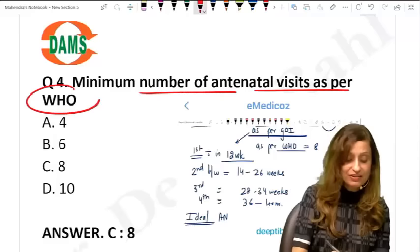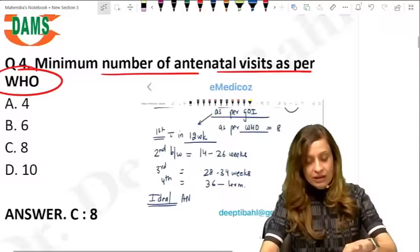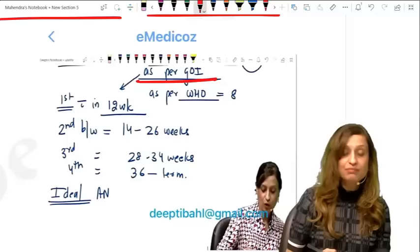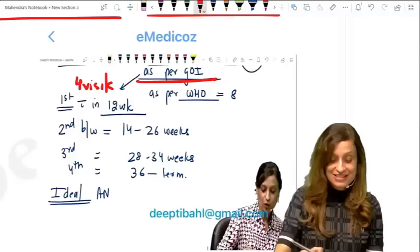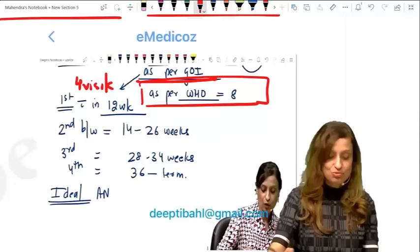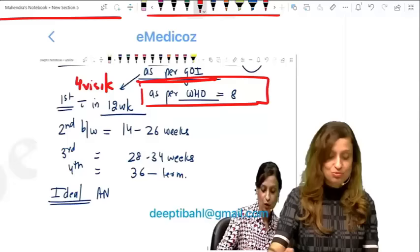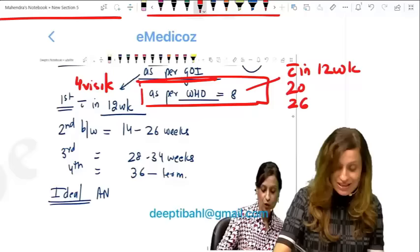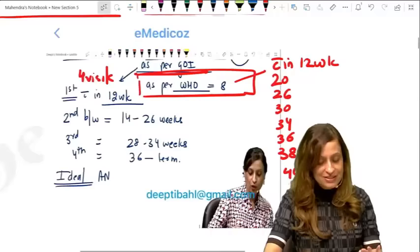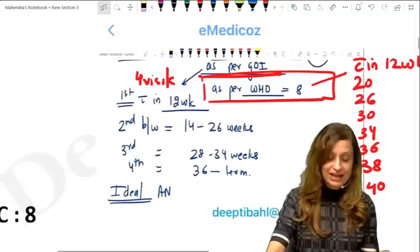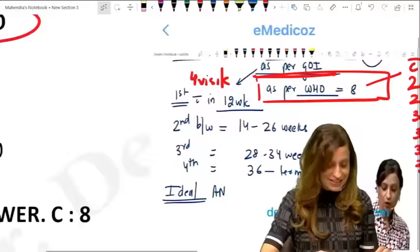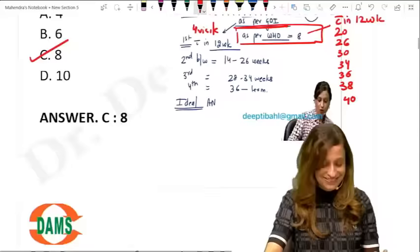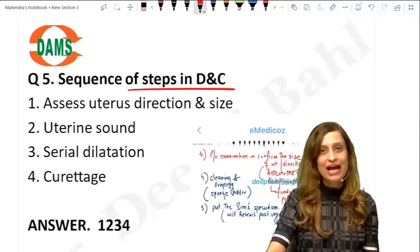Next question: minimum number of antenatal visits as per WHO. As per the Government of India the minimum requirement is four visits, but as per WHO the minimum requirement is eight visits. The first visit is within the first 12 weeks, then around 20, 26, 30, 34, 36, 38, and 40 weeks — a minimum of eight contact visits as per WHO guidelines.